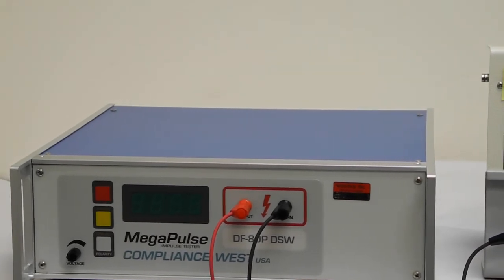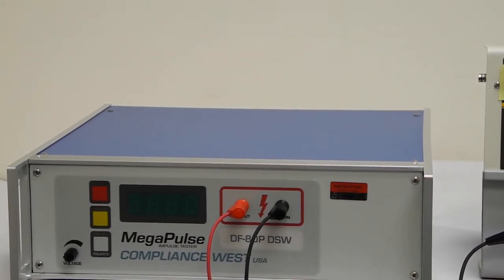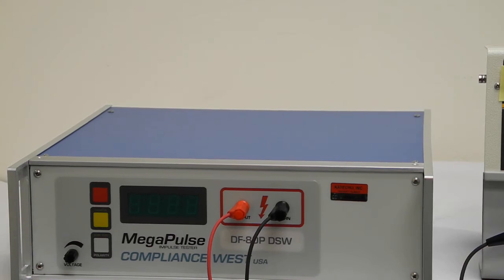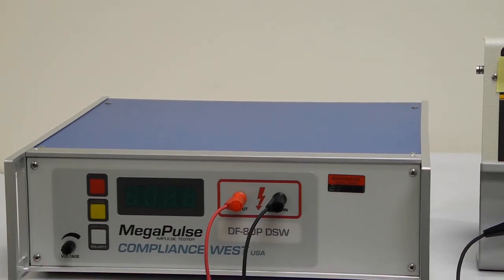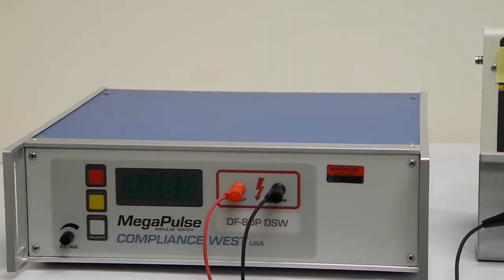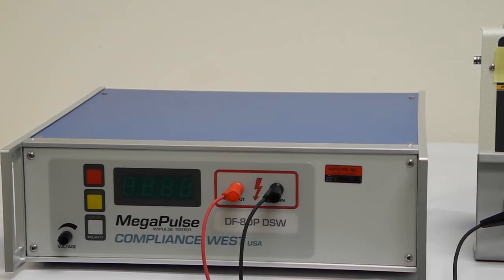We are using another model of surge tester for this demonstration, but the procedure is similar. Here we have connected the Fluke Impulse 4000 directly to the output of the surge generator.